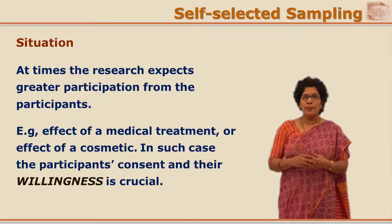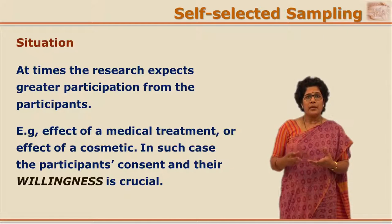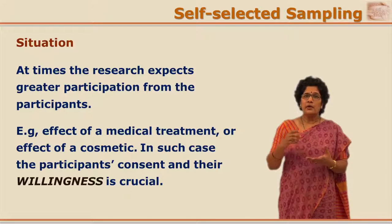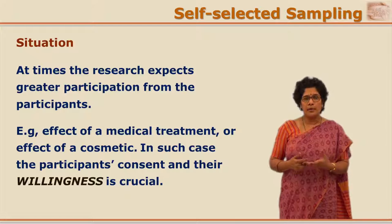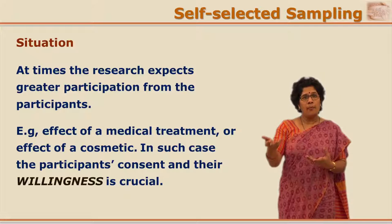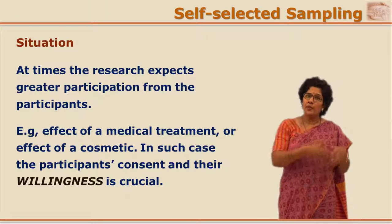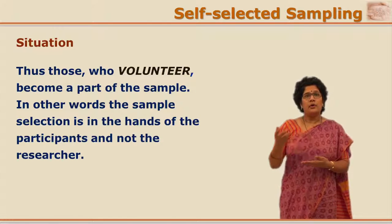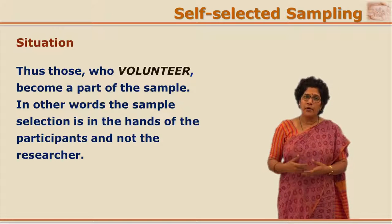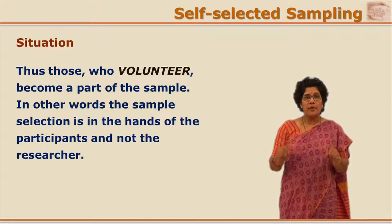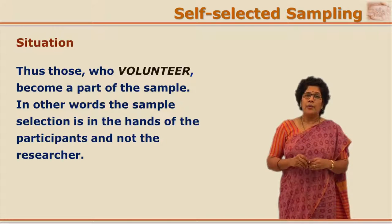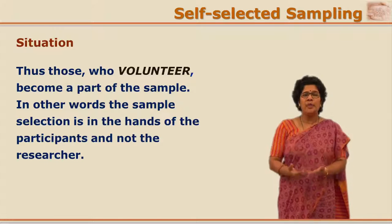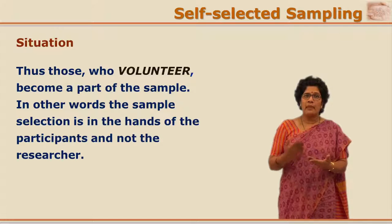There are certain researches where a lot of time and input on the part of participants is expected — for example, researches related to medical treatments or cosmetics. In that case, even if the researcher has a list of population units, one cannot expect that the unit selected through randomization will be ready to participate and go through the treatment. So the researcher has to give the option for participants to volunteer for such a study. When sampling is made where the participant says 'I want to be a part of this sample,' that kind of procedure is called self-selected sampling.